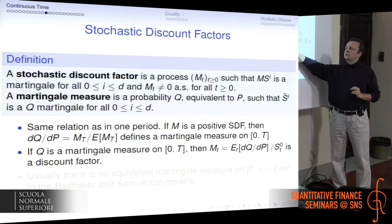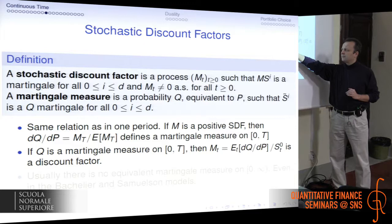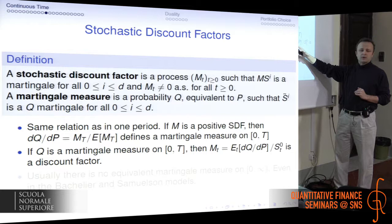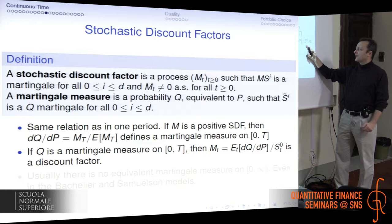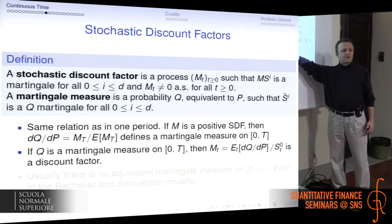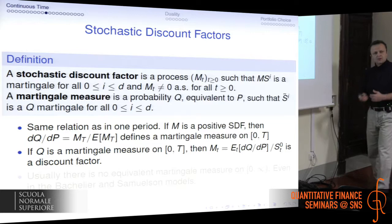The relation between the martingale measure and the stochastic discount factor is quite straightforward. A strictly positive stochastic discount factor corresponds to a martingale measure and vice versa. The stochastic discount factor is generally equal to the conditional expectation of the Radon-Nikodym derivative of the martingale measure with respect to the original measure, divided by the risk-free asset. And vice versa, if you have a stochastic discount factor, you multiply it by the risk-free asset to get your Radon-Nikodym derivative at the final time.